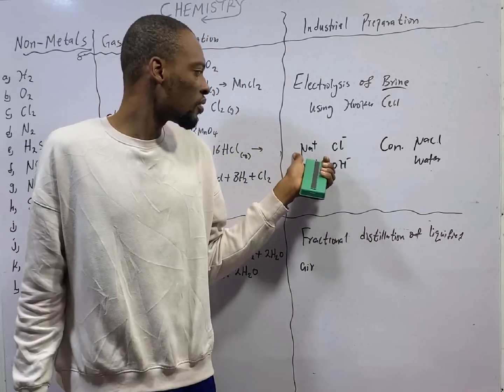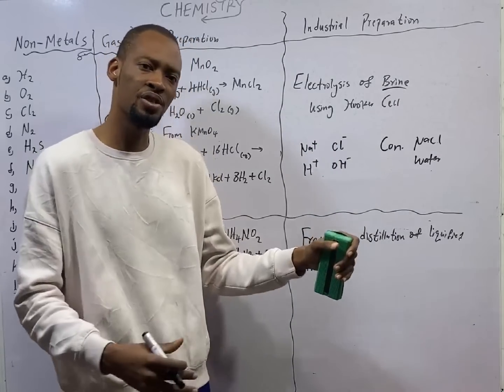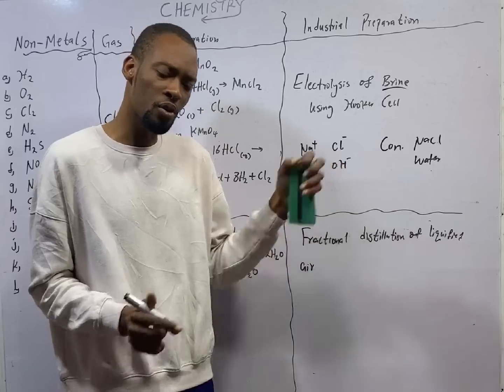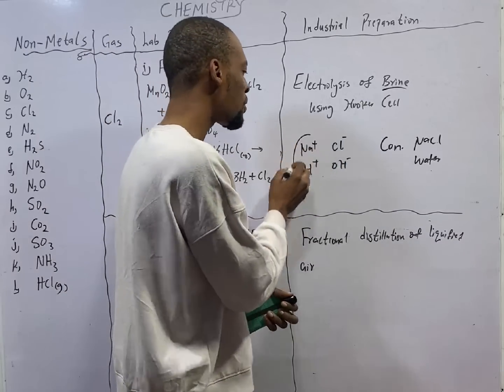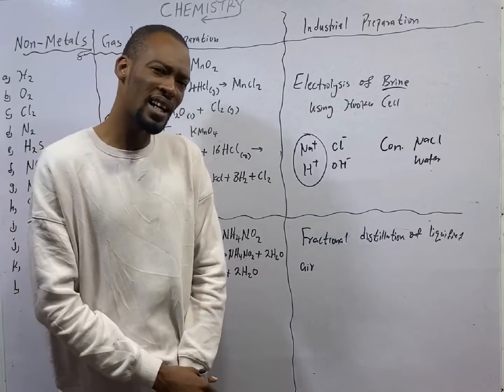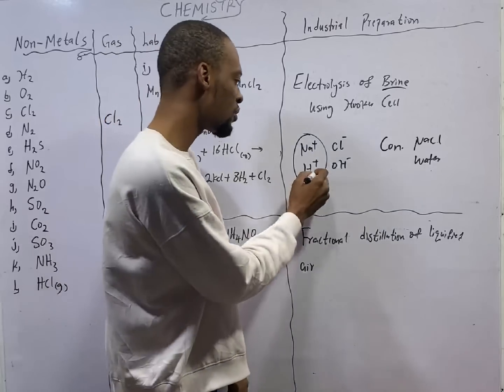Sodium ion and hydrogen are far apart in the series, which means concentration will not play a role for the positive ions. Therefore, the one that is lower in the series will be preferentially discharged, which is hydrogen.